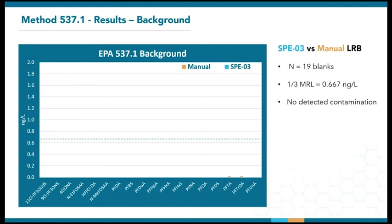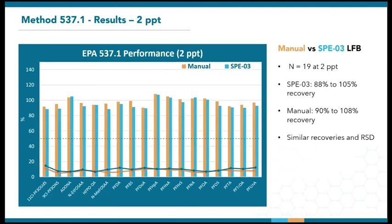Now let's see how the manual and automated systems performed over time. This graph looks at the 2 PPT LFBs across 19 field extraction batches between the manifold and the SPE03. The bars represent recoveries, whereas the lines at the bottom represent standard deviation. Since 2 PPT is their reporting level, the limits are 50% to 150%. Both manual and SPE03 extractions yielded similar results well within this range. Average recoveries were between 88% to 105% on the SPE03 and 90% to 108% on the manifold. The RSDs are also comparable and below 20% for both, even at this low level, all done on separate dates by different lab personnel.